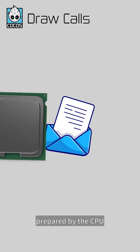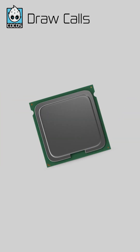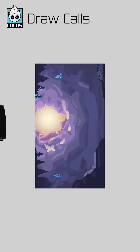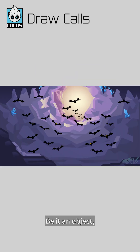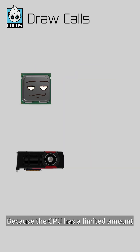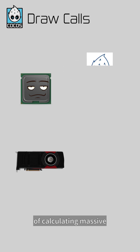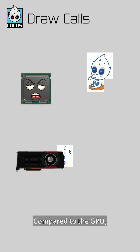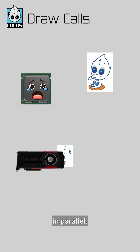A draw call is a set of data prepared by the CPU that tells the GPU what and how to draw on the screen, be it an object, enemies, the player, and UI panels. Because the CPU has a limited amount of cores, it does a poor job of calculating massive amounts of pixels one by one on the screen, along with its other duties, compared to the GPU, which can do many small jobs in parallel.